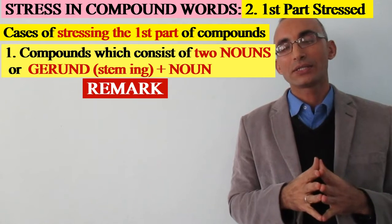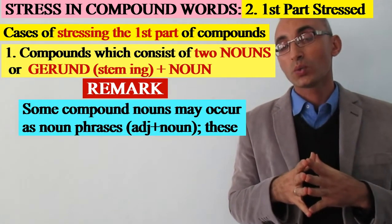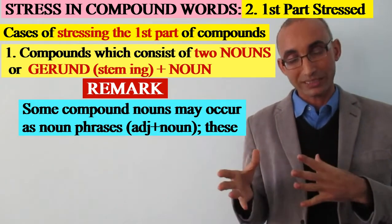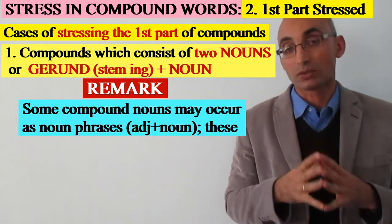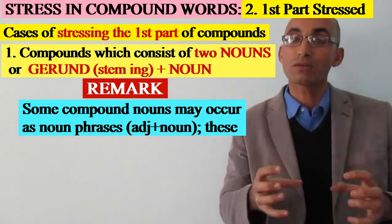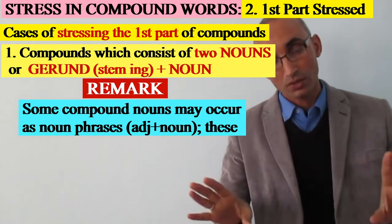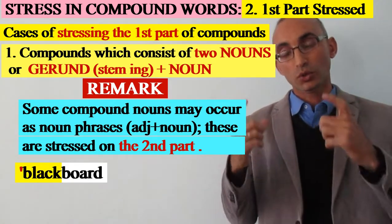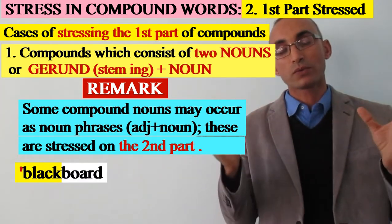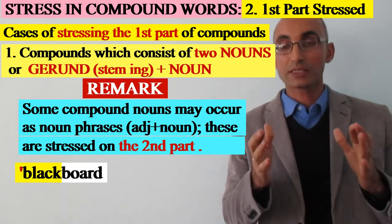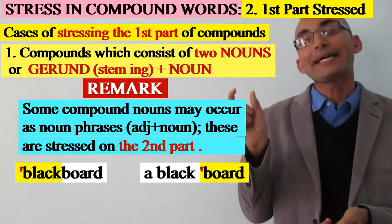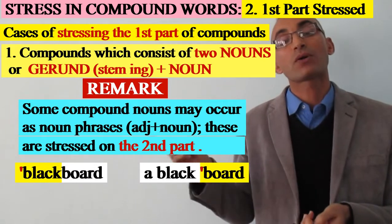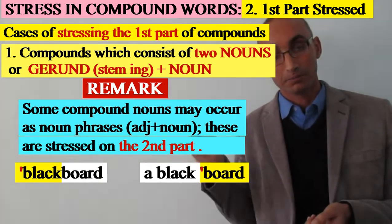We also have a remark about compound nouns that may occur in the form of noun phrases. When a compound noun occurs as a compound word, we stick to the main rule and stress the first part. For example, 'blackboard' as one word — a board used in school for writing — we stress 'black'. But if I say 'a black board', meaning any board which is black, that is a noun phrase — not a compound — and here I stress the second word: 'board'.